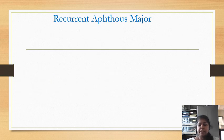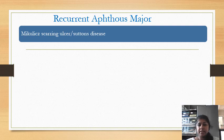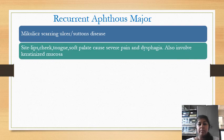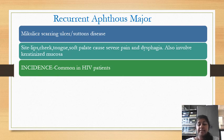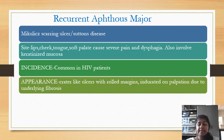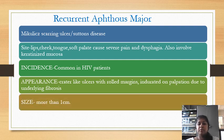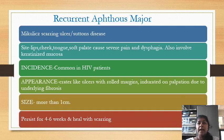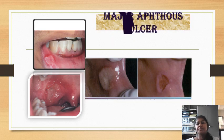Next is Recurrent Aphthous Major, also known as Nicola's Scarring Ulcer or Sutton's Disease. This is commonly seen on the lips, cheek, tongue, and soft palate, and can cause severe pain and dysphagia. It can also involve the keratinized mucosa like the palate and gingiva. Incidence is more common in HIV patients. These ulcers appear as crater-like ulcers with rolled margins, indurated on palpation due to underlying fibrosis. The size is more than 1 cm and these are long-duration ulcers which persist for 4 to 6 weeks and heal with scar formation.